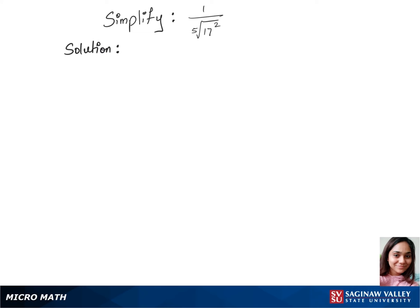We'll simplify this question by rationalizing the denominator. In our first step, that's 1 over the 5th root of 17 squared, times the 5th root of 17 cubed over the 5th root of 17 cubed. Let's multiply these in our next step.